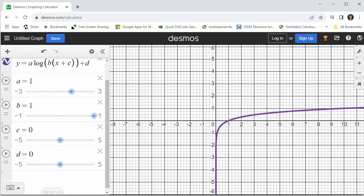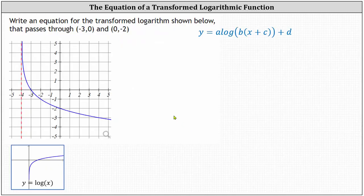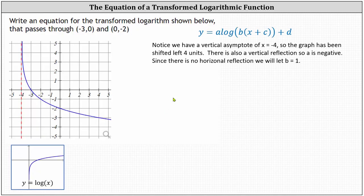Going back to our graph. The first thing to notice is that the vertical asymptote is x equals negative four, rather than x equals zero, which indicates the graph has been shifted left four units, which indicates c is equal to positive four.